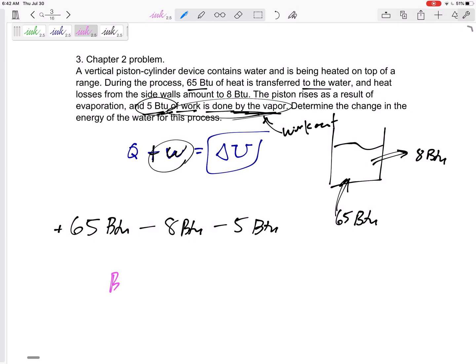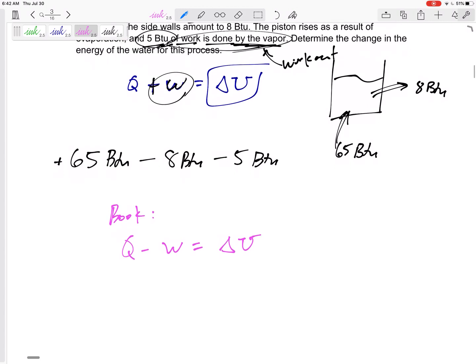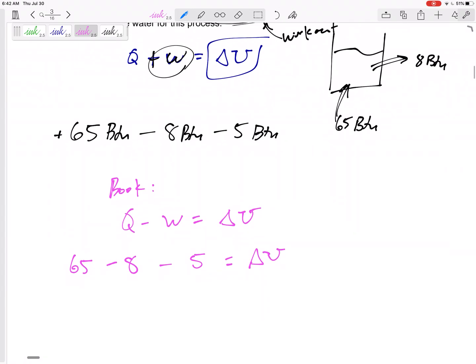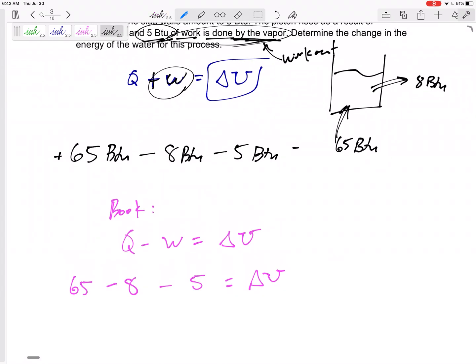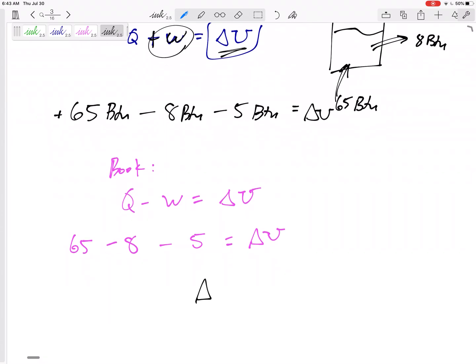Now, here's what the book would do. They say Q minus W equals delta U, and they would say that the work out is positive. So they would have 65 minus 8 minus positive 5 equals delta U. So now this is just delta U for now. We haven't talked about H's and U's yet. However you do it, you should get 52 BTU.